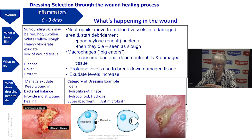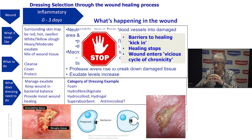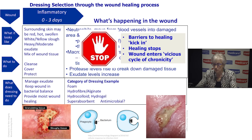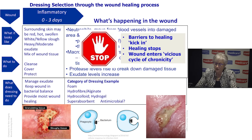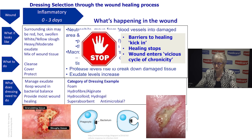It is at this point in time that the wound can stop healing when barriers to healing kick in. Those barriers include things like patients on steroids, poor nutrition, and underlying diseases such as arterial or venous disease. When any of these barriers kick in, the wound healing process stops, and the wound enters what we call a vicious cycle of chronicity — it becomes chronic. When we use the term chronic, it's not a particular type of wound — it's where the wound is in the healing process, stuck in that inflammatory stage.